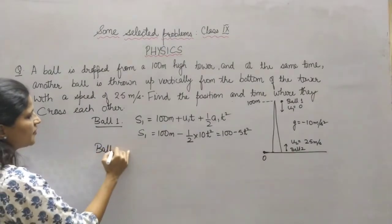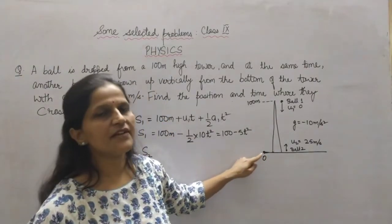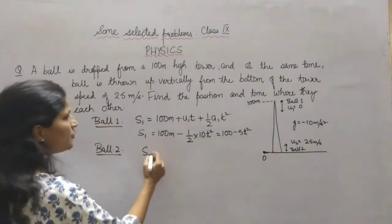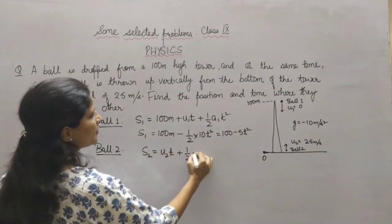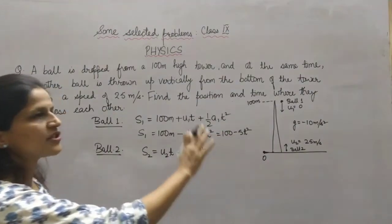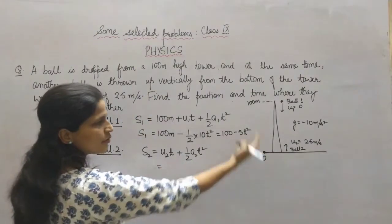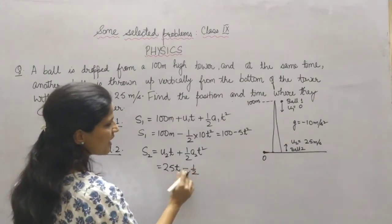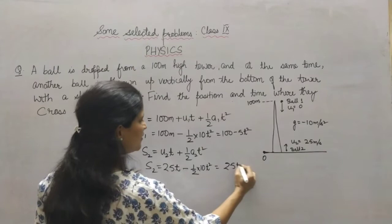For ball 2, its journey begins from the origin, so initial position is zero. S2 = U2·t + ½·A2·t². Since U2 is positive (upward), it's +25t. Acceleration is negative in both cases in vector convention, so: S2 = 25t + ½ × (−10) × t² = 25t − 5t². This is the displacement equation for ball 2.